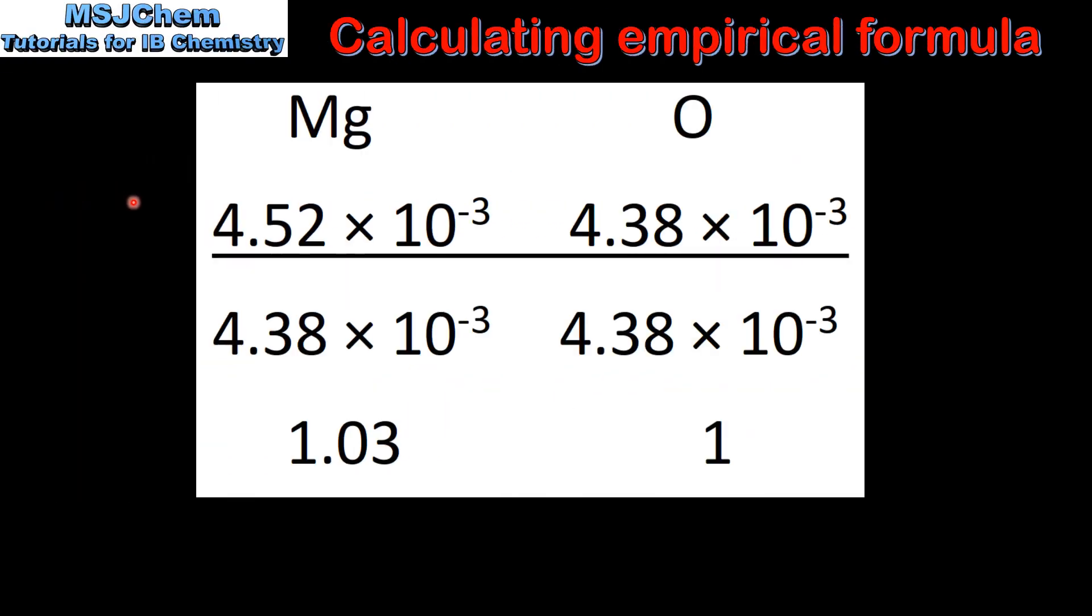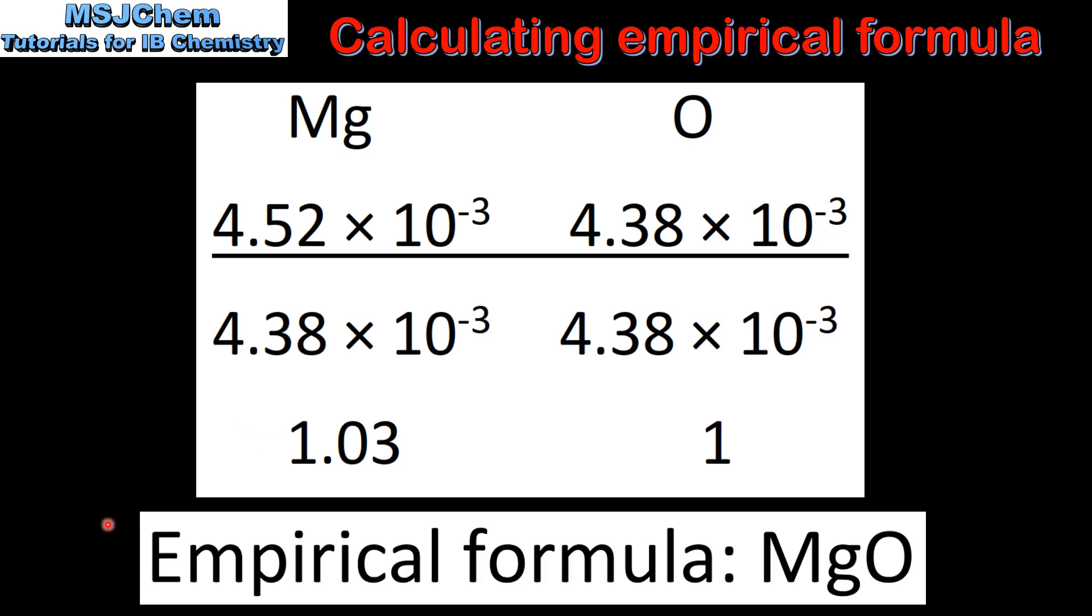The final step is to divide the amount in moles of magnesium and oxygen by the smallest amount. When we divide by the lowest amount, 4.38 × 10⁻³, we get the lowest whole number ratio of atoms in the compound. From this experimental data, the empirical formula of magnesium oxide is MgO.